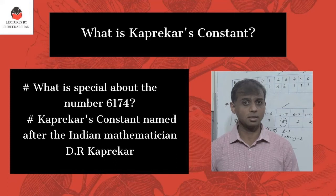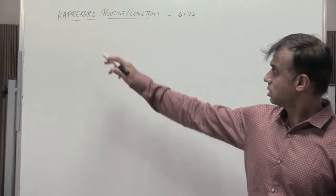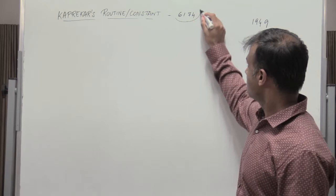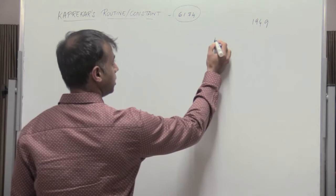This is a very interesting phenomenon which was found out by the Indian mathematician Kaprekar in the year 1949. Now this constant is associated with the number 6174. He took a four-digit number which is non-repeated. That means we need to avoid numbers like four ones, four twos, and so on.